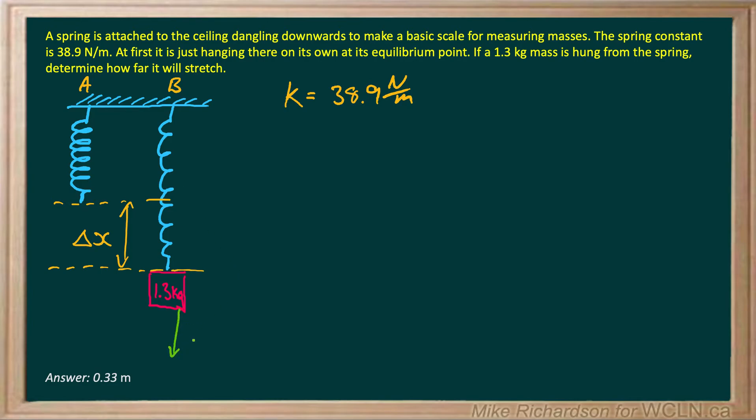It's got a force of gravity acting down on it and what's holding it up is the spring. And because it's not moving, those two forces are equal. So our spring force has to equal our force of gravity and that's simply because the net force is zero. Everything has to be balanced.